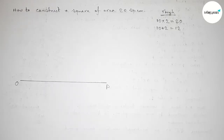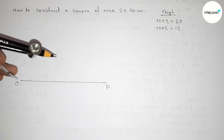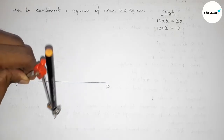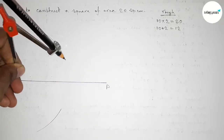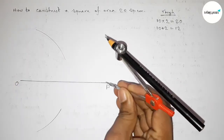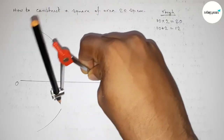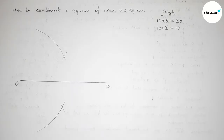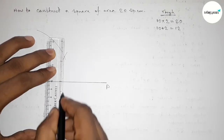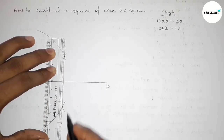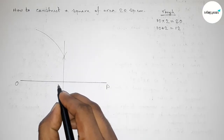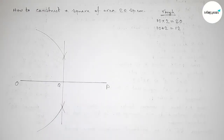Now we have to bisect this line OP using a compass. Supporting the compass here, taking greater than half of OP and drawing an arc, then putting the compass at the other end with the same length and cutting arcs on both sides. Both curves intersect at two points. Joining these points bisects OP, giving midpoint Q. So OQ and QP are each 6 centimeters.